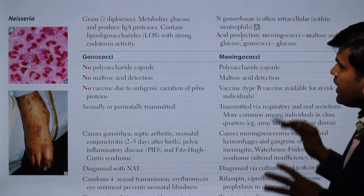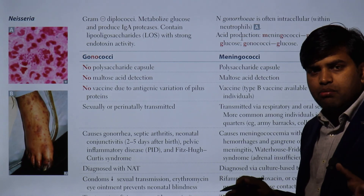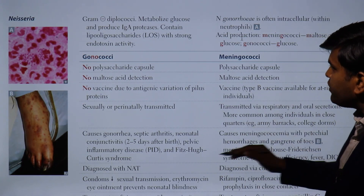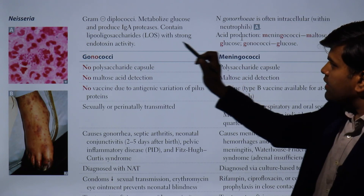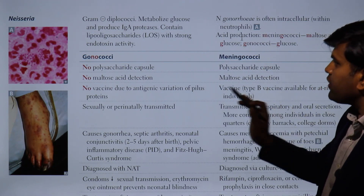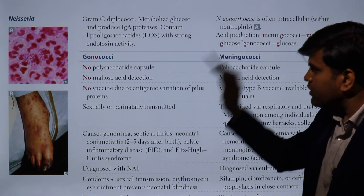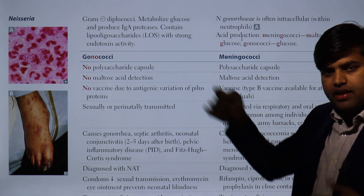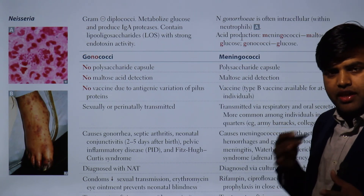Returning to the USMLE Step 1 2021 microbiology section, page 142, reviewing key points about Neisseria: both species are gram-negative diplococci and both metabolize glucose. Both produce IgA protease — whether infecting the respiratory tract or the genitourinary tract, they need IgA protease to breach the protective mucosal IgA layer.